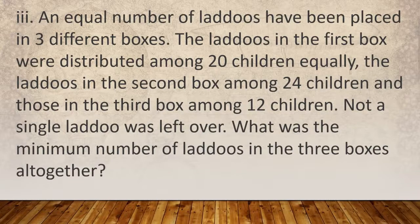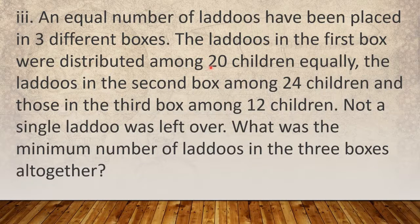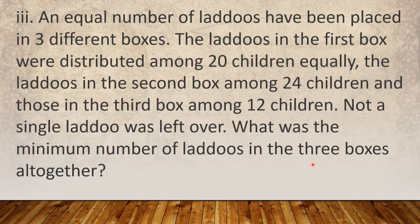Question number 3: An equal number of laddos have been placed in three different boxes. The laddos in the first box were distributed among 20 children equally, the laddos in the second box among 24 children, and those in the third box among 12 children. Not a single laddo was left over. What was the minimum number of laddos in the three boxes altogether? Here we have to find out the minimum number of laddos in all three boxes.